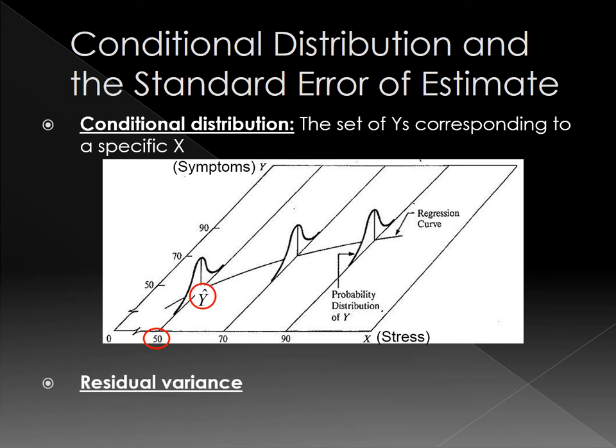Then the variance of this conditional distribution is called a residual variance. Residual means error. This can also be called an error variance. That is, we want to use the regression curve to predict y, which is y hat. Some people scored above y hat, some people scored below y hat. And this residual variance is the variance of this distribution or the variance of this conditional distribution.